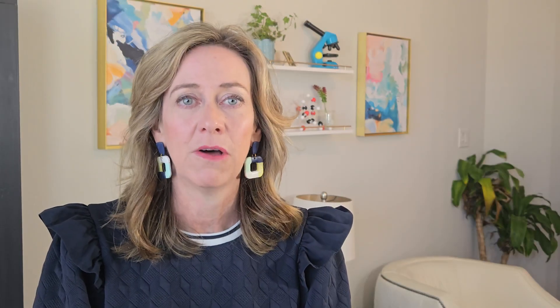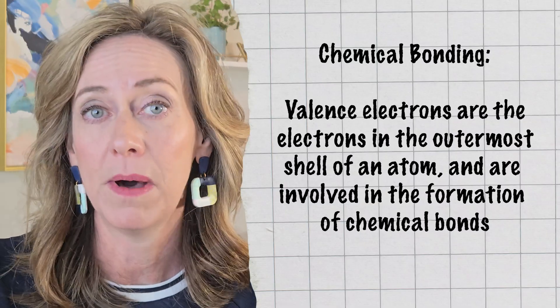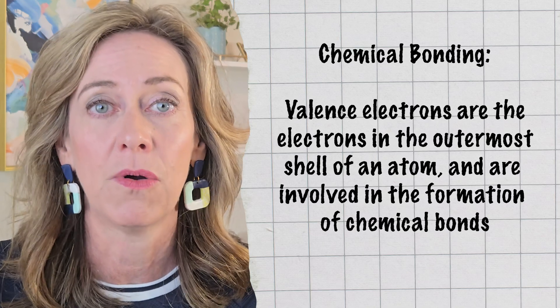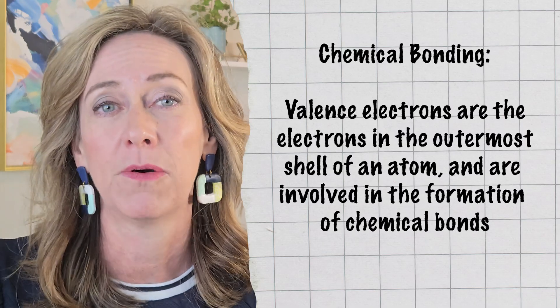Now let's take a closer look at the structure of an atom using something called the Bohr model, proposed by physicist Niels Bohr back in 1913. It's a simple representation that shows us how electrons are in energy levels called shells. Electrons can only move between these energy levels by absorbing or emitting specific amounts of energy. Atoms can join with other atoms to form compounds or molecules — this is called a chemical bond. The outermost electrons, in what we call the valence shell, are what participate in chemical bonding.